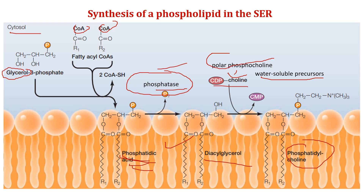The addition of different polar head groups leads to the formation of different lipids in the ER membrane. Examples include phosphatidylcholine, phosphatidylserine, phosphatidylethanolamine, and phosphatidylinositol. The synthesis of these phospholipids on the cytosolic side of the ER allows the hydrophobic fatty acyl chains to be buried in the membrane, while the membrane-bound enzyme catalyzes reactions with water-soluble precursor CDP in the cytosol.